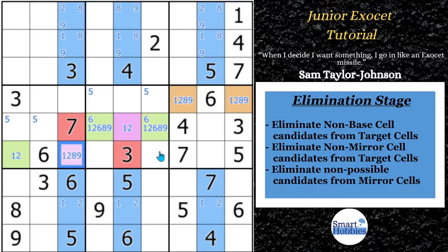Unfortunately, you can't make too many more eliminations, and it is a brutally hard puzzle. If you want a hint, this cell is an eight — knowing that, you can make progress and possibly solve it. I wanted to show this so you can understand how to set up and look for a junior ExoSet. Now let's move on to our last example.